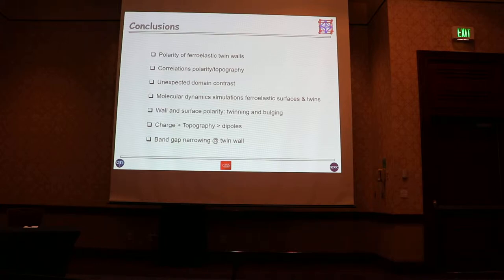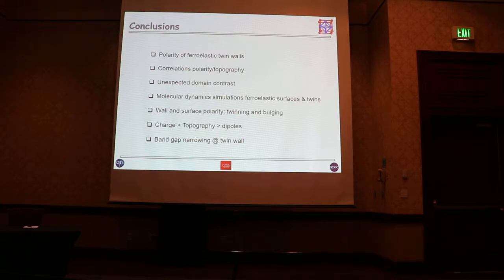The charged surface — that's what determines the contrast in the electron images — and then the physical topography. But if this doesn't exist and you have charged neutral surfaces, then your dipoles take over and you can really look at the contrast in polarity.